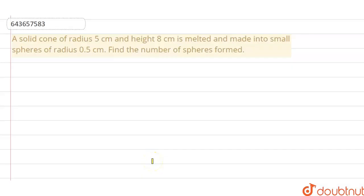Hello everyone, let's discuss this question. The following question says, here, a solid cone of radius 5 cm and height 8 cm is melted and made into small sphere of radius